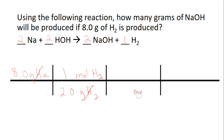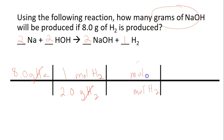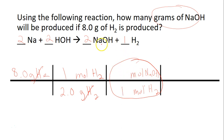I'm going to bring moles of H2 to the bottom. In this problem, we're trying to get to grams of NaOH. Before I can go to grams, we've got to go back to moles first — we have to use that mole ratio. So moles of NaOH. I like to circle mole over mole to remind me to go get my coefficients: we have 1 mole of H2 and 2 moles of NaOH. Moles of H2 cancels out, leaving me with moles of NaOH, but we want grams.